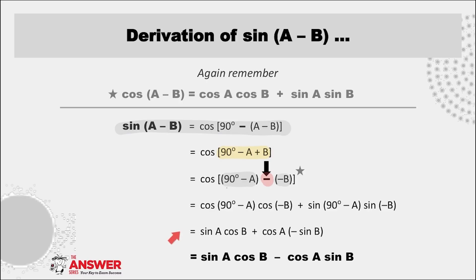This next step is applying both co-ratios and reduction of the fourth quadrant angles. And then finally, this results in the formula sin(A - B) = sin A cos B - cos A sin B, which is the expansion of sin(A - B).